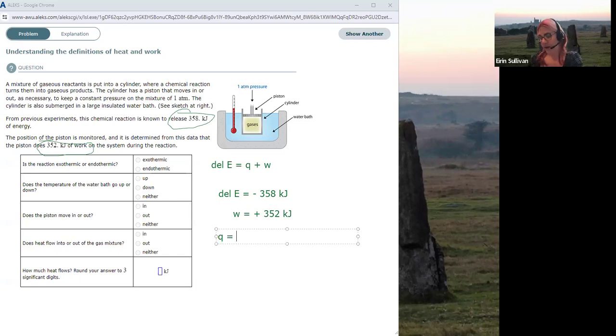So Q is going to be delta E minus W. Delta E, be careful with your signs, was minus 358 minus our W, which was plus 352.